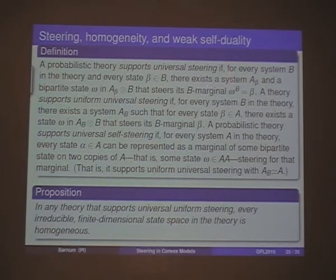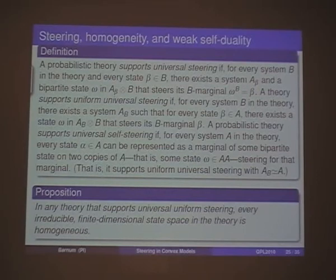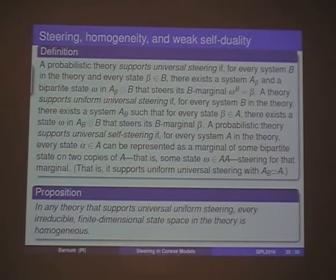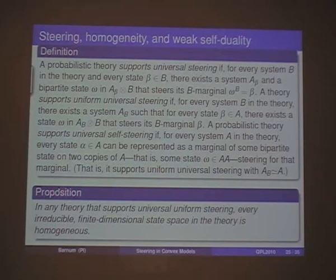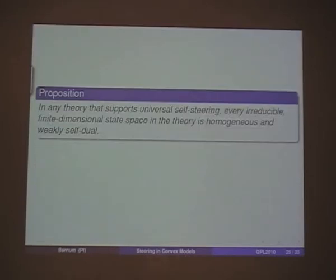We say a theory supports universal steering if for every system B in the theory and every state beta of B, there's a system A_{beta} and a bipartite state omega in A_{beta} ⊗ B that steers the B marginal to that state beta. We say it's uniform if you can always pick this system A to be the same system independent of beta — quantum theory has that property. And we say universal self-steering if for every system in the theory we can pick A_{beta} not only to be independent of beta, but to be isomorphic to B. In any theory that supports universal self-steering, every irreducible bipartite state space is homogeneous. And if additionally required to be self-steering, we get homogeneity and weak self-duality — getting quite a bit closer to quantum theory.